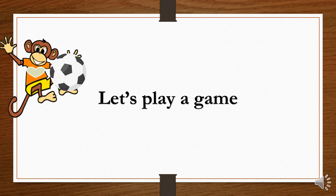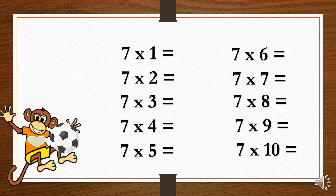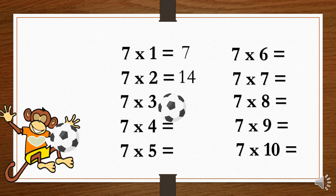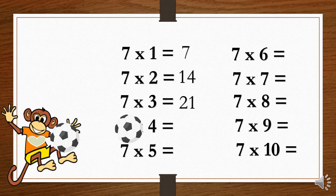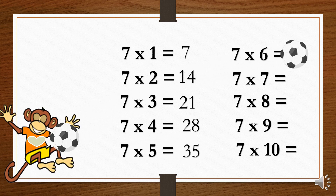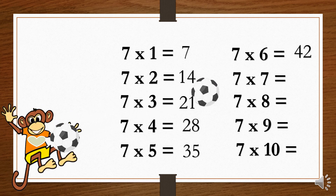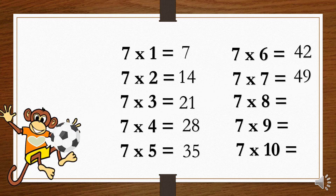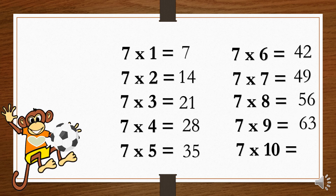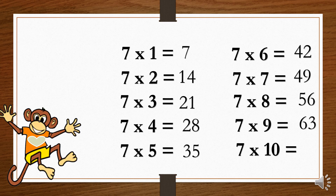Let's play a game. 7×1=7. 7×2=14. 7×3=21. 7×4=28. 7×5=35. 7×6=42. 7×7=49. 7×8=56. 7×9=63. 7×10=70.